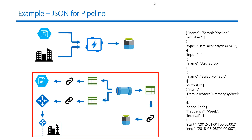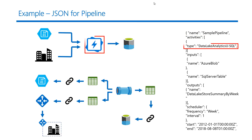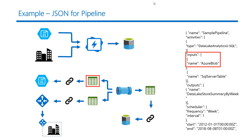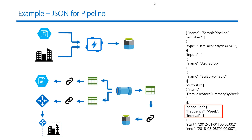On the right side, you see the JSON used to define the pipeline for the first activity. In the JSON, we define the name of the pipeline, the type of activity running on our data, and the input datasets consumed by the activity — namely the Azure Blob and the SQL Server table. We also define the output, which in this case is a Data Lake Store. Further, we define the schedule frequency for this pipeline, which is once a week, and the start and end dates during which the pipeline will be active.